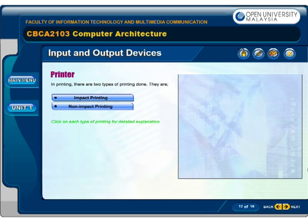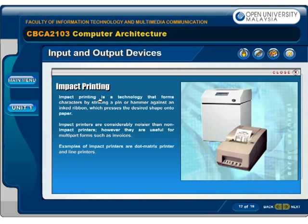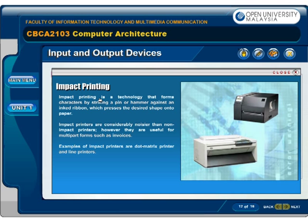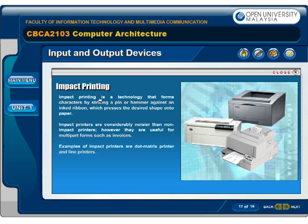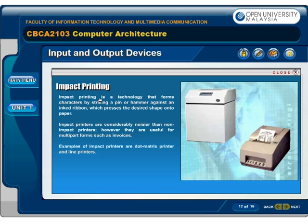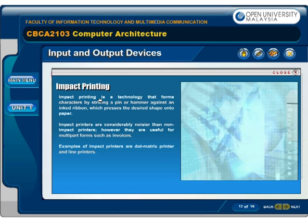In printing, there are two types of printing. They are impact printing and non-impact printing. Impact printing is a technology that forms characters by striking a pin or hammer against an ink ribbon, which presses the desired shape onto paper. Impact printers are considerably noisier than non-impact printers; however, they are useful for multi-part forms such as invoices. Examples of impact printers are dot matrix printers and line printers.